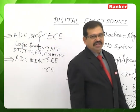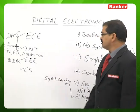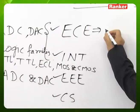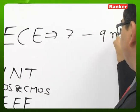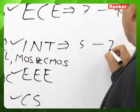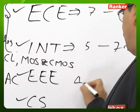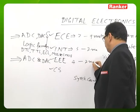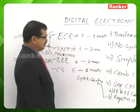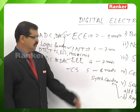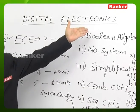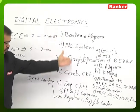Regarding the weightage of this subject in the GATE examination: for the ECE branch it generally varies between seven to nine marks; for the Instrumentation branch, five to seven marks; for the EEE branch, four to seven marks; and for Computer Science, generally five to eight marks. We need to start the subject with Boolean Algebra, following that order to cover the syllabus.